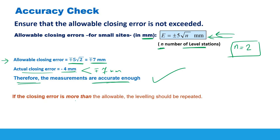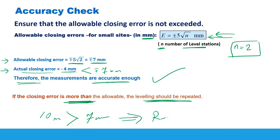However, if the closing error exceeds the allowable closing error, the leveling should be repeated because we haven't met the required accuracy for the project. For example, if the actual closing error were 10 millimeters — which is more than 7 millimeters — we would have to repeat all of the measurements to achieve better accuracy.